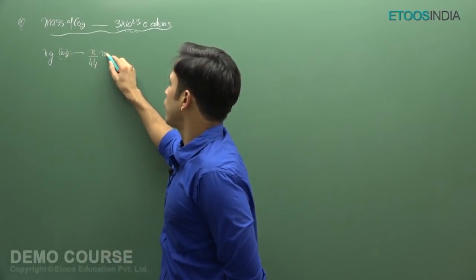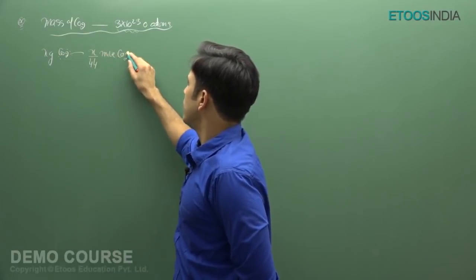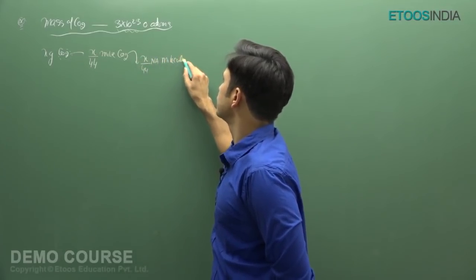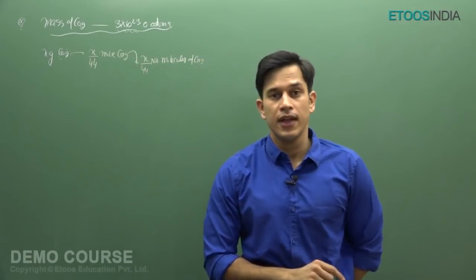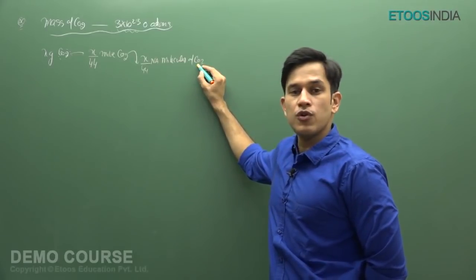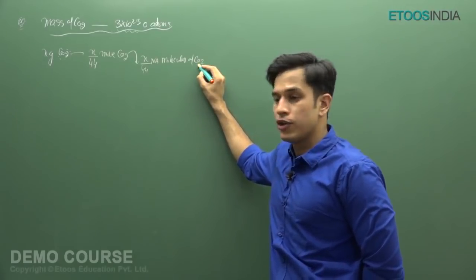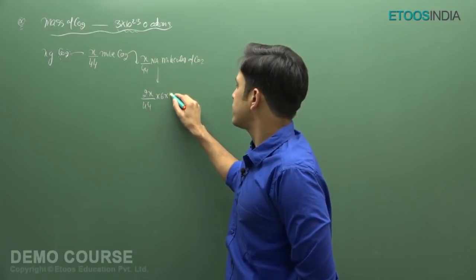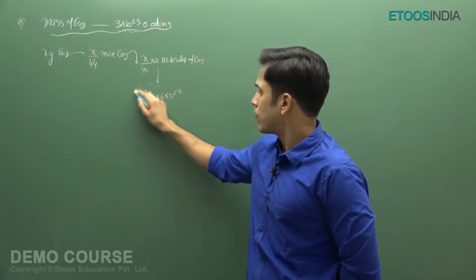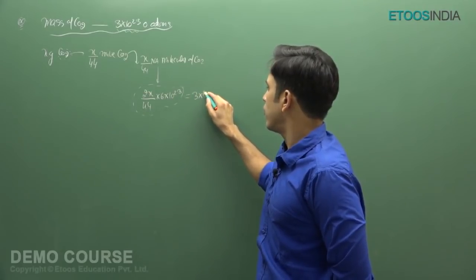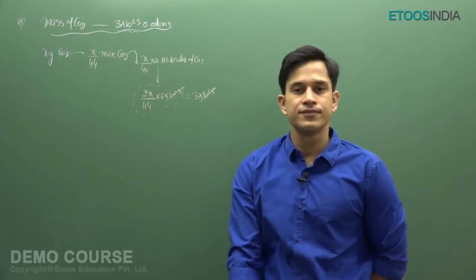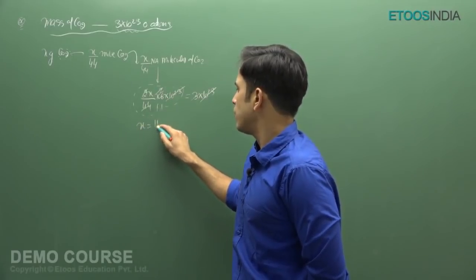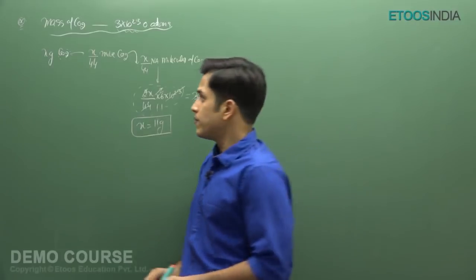You have x upon 44 moles of CO2. Multiply by Na and you have x by 44 times Na molecules of CO2. Since one CO2 molecule has two oxygen atoms, the number of oxygen atoms equals 2x upon 44 into Na, which is 6 into 10 to the power 23. Setting this equal to the given value and solving, 3 into 4 cancels to give 11, so the mass of CO2 is 11 grams. This is method number 1.